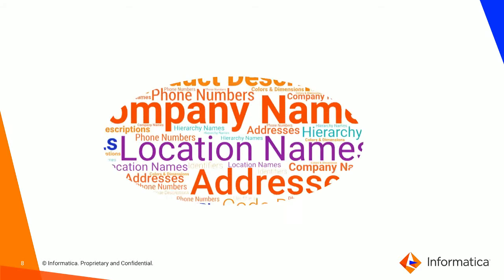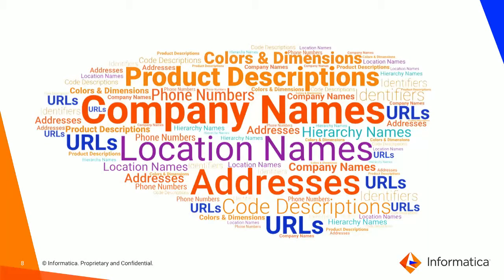And it's not just person names that have this. You find similar and actually sometimes worse variations in things like company names, product descriptions, addresses, location descriptions, URLs, and email addresses. So with all this variation and mess in our master data, how do we ever make identity data relevant and actionable?